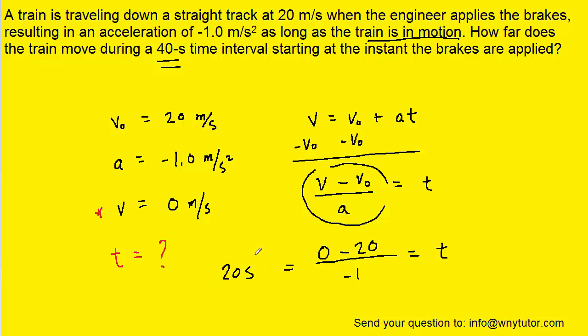Now when you calculate this time, you should see that it equals 20 seconds. So that's how long it's going to take, 20 seconds for the train to come to rest or to have a final velocity of 0 meters per second. So 20 seconds to stop.